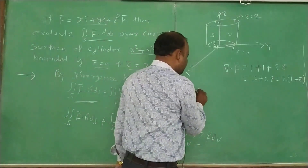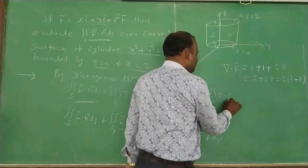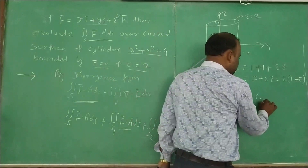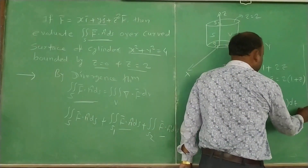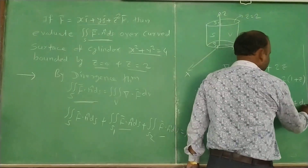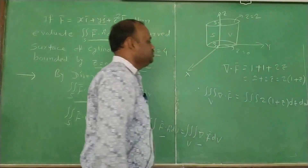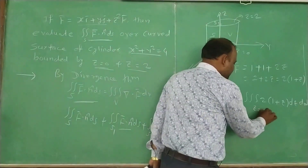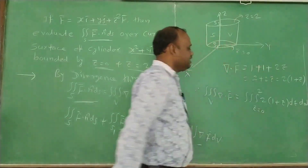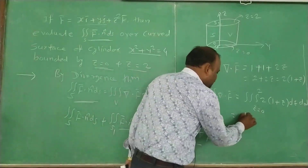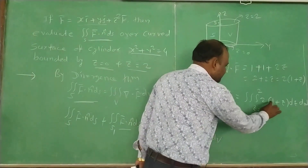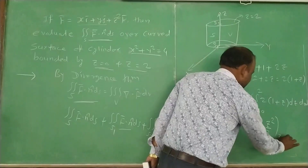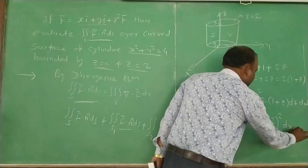Now we evaluate the triple integral: triple integral over V of ∇·f̄ dV equals the triple integral of 2(1+z) dz dx dy, where z varies from 0 to 2. Taking the inner integral with respect to z first, we get 2 times the double integral of [z + z²/2] from z=0 to z=2, times dx dy.